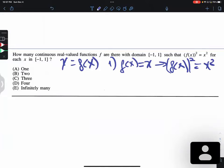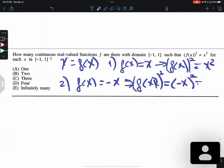The second one, we're gonna have: if f of x equals negative x, then f of x squared is negative x squared, which is also x squared. Now we have the second.